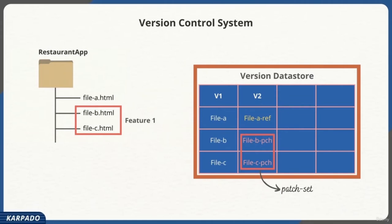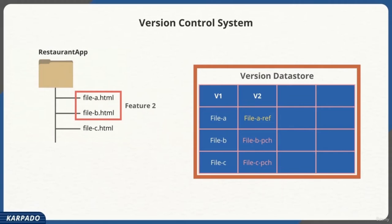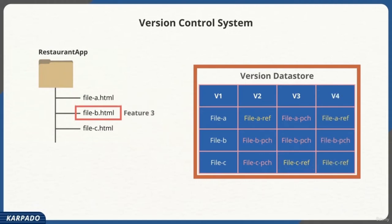Similarly, for feature 2 where file A and file B were modified, the VCS software stores patch sets for file A and file B, and only stores the reference for file C's previous version. For another feature where only file B is modified, the VCS software stores the information accordingly. Now assume Sundar is not happy with version 4 of file B and wants to get back to version 3 of file B.